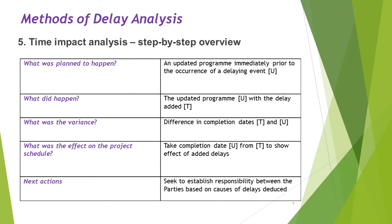Time Impact Analysis. What was planned? The updated program immediately prior to the occurrence of a delaying event. What did happen? The updated program U with the delay added, T. What was the variance? The difference in completion dates T and U. What was the effect on the project schedule? Take the completion date U from T to show the effect of added delays. Next action: seek to establish responsibility between the parties based upon the causes of the delays deduced in all activities.